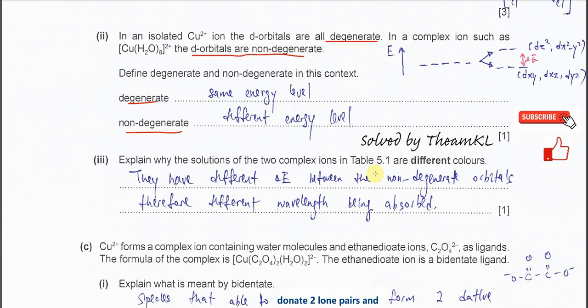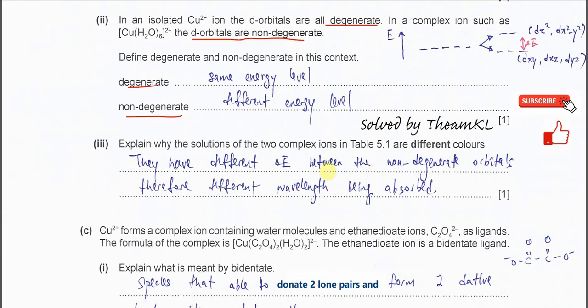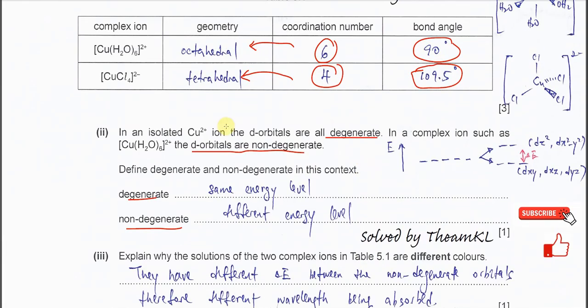Part 3: Explain why solutions of the two complex ions in Table 5.1 have different colors.